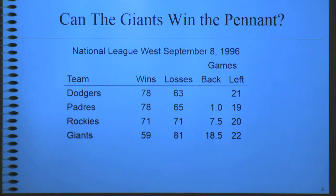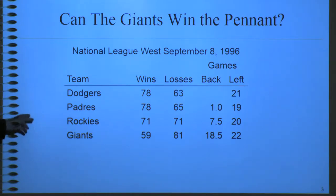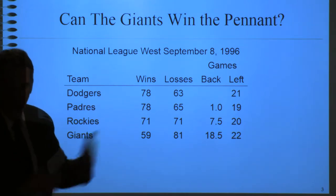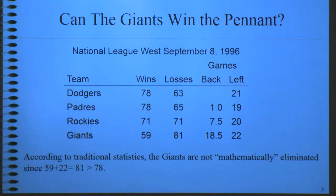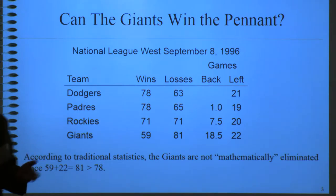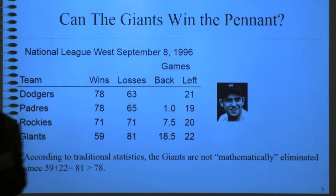I want to talk about minimum cuts in a more fun application — sports standings. Here's an example from what used to be the National League West in baseball. The Giants, who I was rooting for at the time because I lived in the Bay Area, were in last place, very far behind the top two teams. But would it be possible for them to move all the way up to first place, or is their season essentially over? The traditional way of doing this is very simple math: how many games does the team have left — in this case 22 — and how many have they won so far — 59. So if they went on a miracle winning streak, they'd win a total of 81 games. The top two teams had only won 78, so it seemed remotely possible that the Giants could catch up.